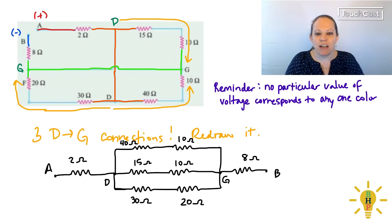Each of those parallel branches has a series pair of resistors. So we can get the equivalent resistance of each of those three branches. And then we can add those to the two and the eight in series.